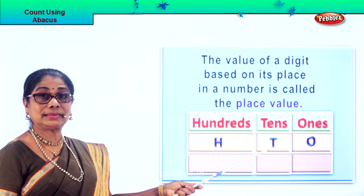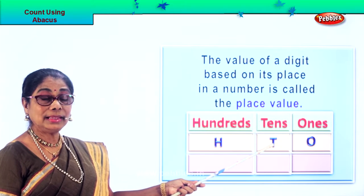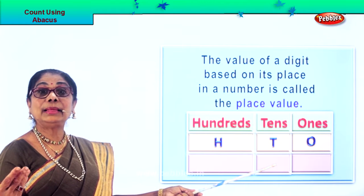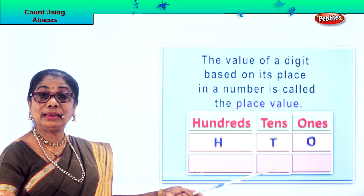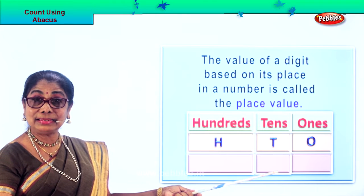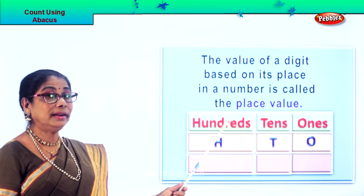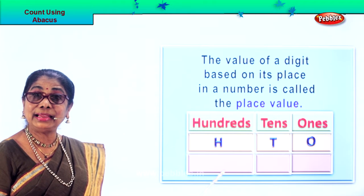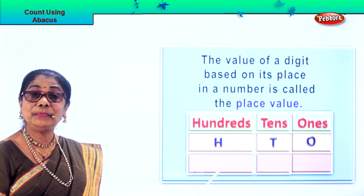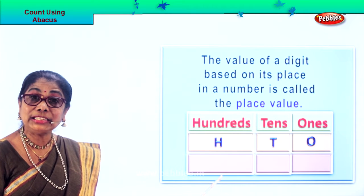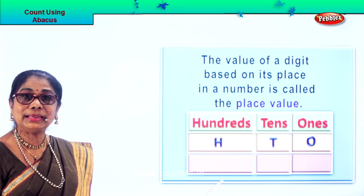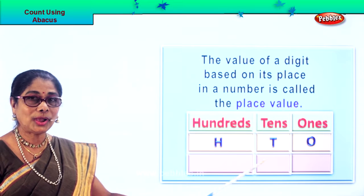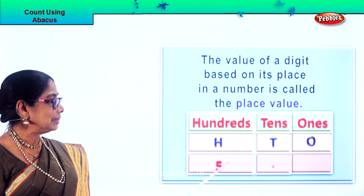If it is tens — T for tens — if the number is here, then we say the place value of that particular number is tens. And then hundreds — the short form is H — if the number is here, we say the place value of that particular number is hundreds. So you have ones, tens, hundreds.